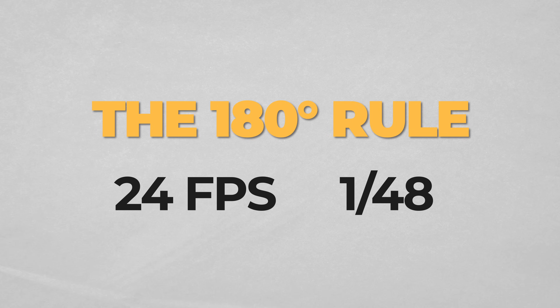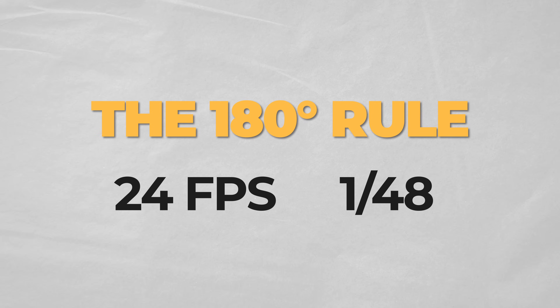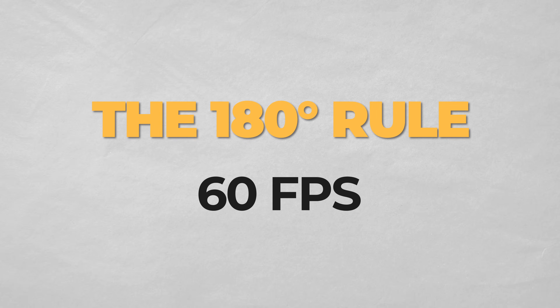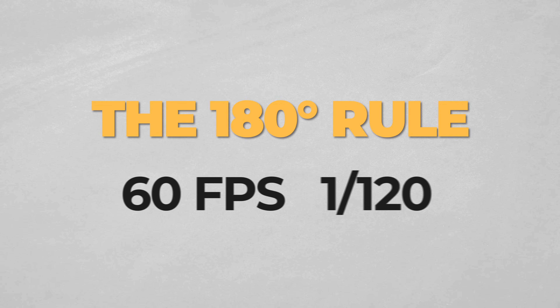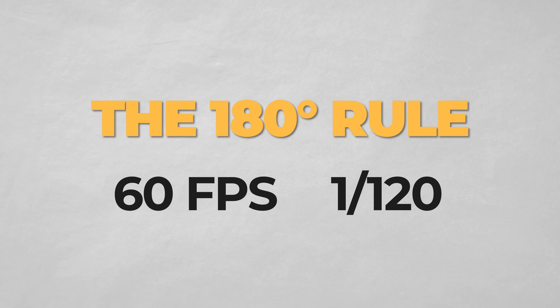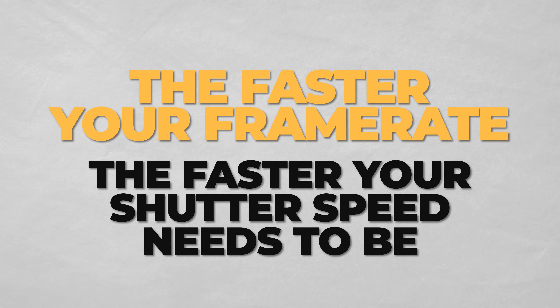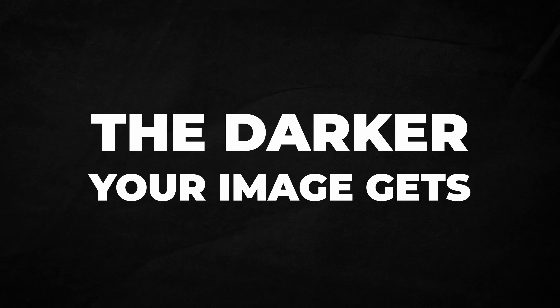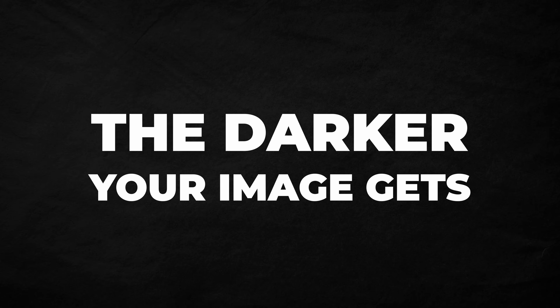So if you're shooting at 24 frames per second, the shutter speed would be 1/48th of a second, or if you're shooting at 60 frames per second, it would be 1/120th of a second. So it's important to remember that the faster your frame rate is, the faster your shutter speed needs to be and the darker your image will be.